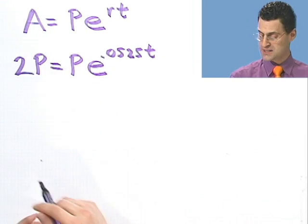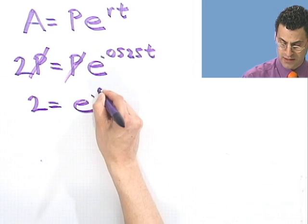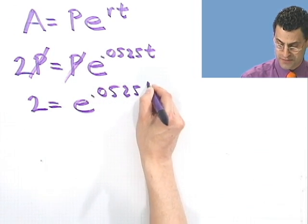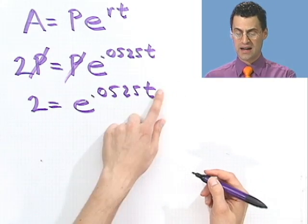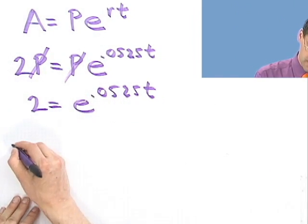Well, notice the P's can cancel. And so I'm just left with 2 equals e to the .0525t. And now it's an exponential thing. I have the unknown and the exponent. Don't want that. So I'll take natural logs of both sides.